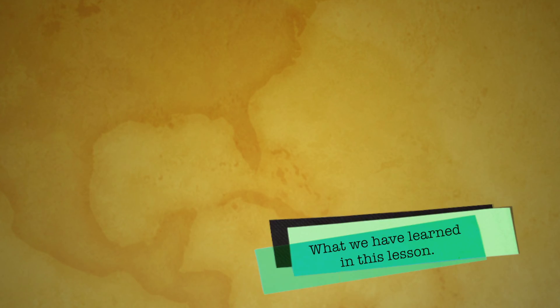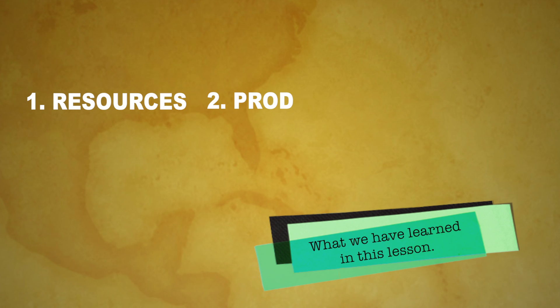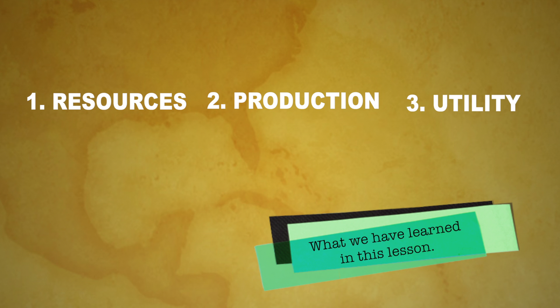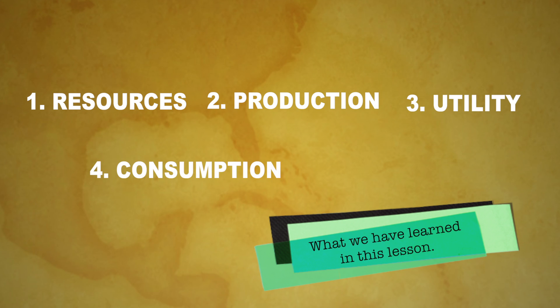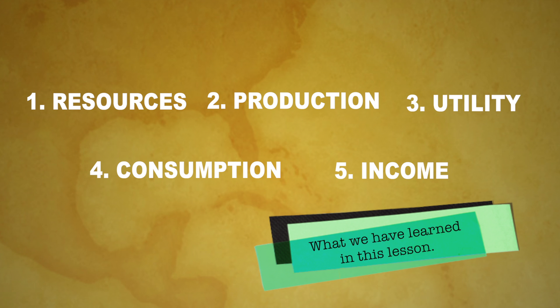Before we close the lesson, I'm going to recap what we discussed. The first concept we discussed is resources, then production, utility, consumption, and income. Now you know about resources, production, utility, consumption, and income. These are the basic concepts in economics. We have come to the end of the lesson. I hope you have enjoyed the lesson as much as I did. Thank you so much and bye-bye.